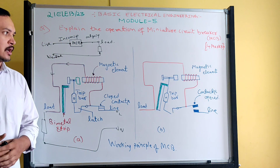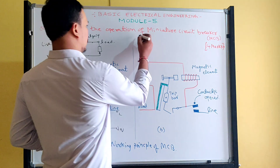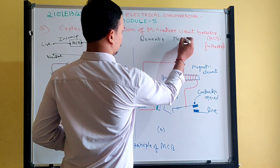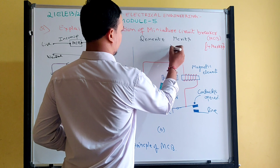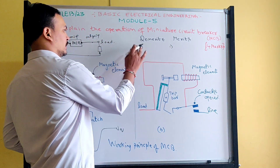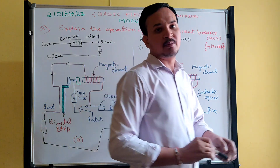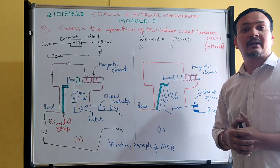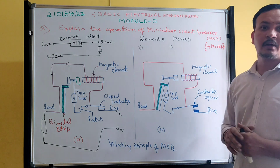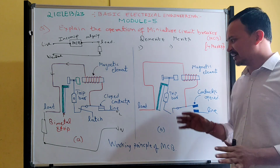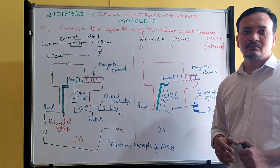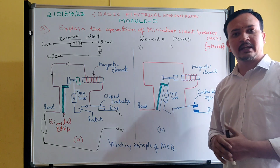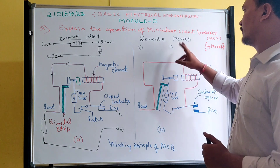Now we can look into the merits and demerits of MCB. The merits are: we can easily identify the electric circuit when tripped. When a fault occurs, MCB trips, so we can easily identify that the MCB has protected against the fault.